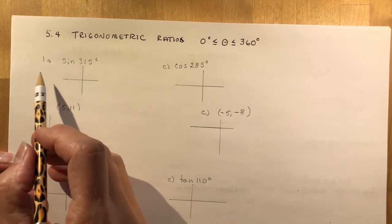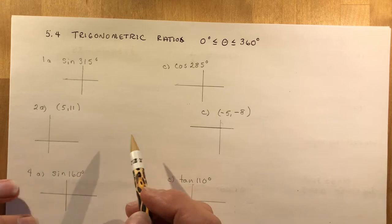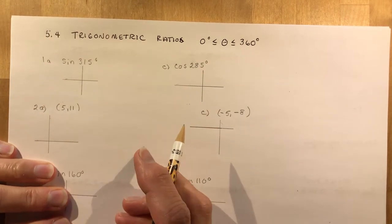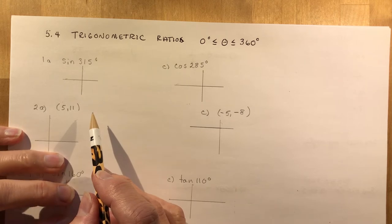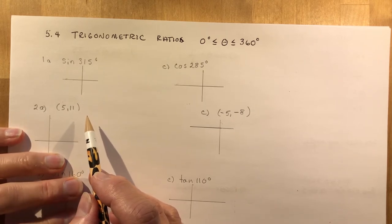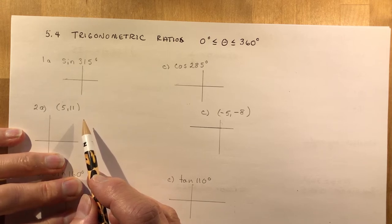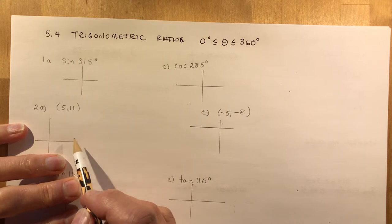For each trigonometric ratio, use a sketch to determine in which quadrant the terminal arm of the principal angle lies, the value of the related acute angle beta, and the sign of the ratio for each of these.